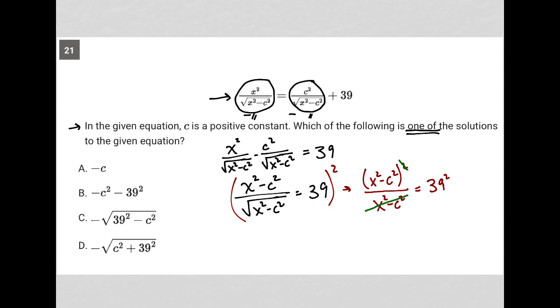Because x squared minus c squared squared practically means you have two of them, right? So I just crossed out one of them with the denominator. So what am I left with? I have x squared minus c squared equals 39 squared.